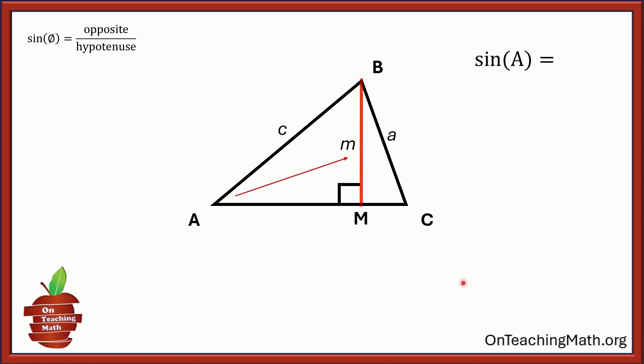So now check this out. We have this little right triangle in here. Let's talk about the sine of angle A for this new triangle. Would you agree that it would be M over C? You see how that works? Angle A did not change, side A didn't change, but now we have this little triangle inside of it. So the sine of A would be M over C. Now let's do the same thing with angle C. The sine of angle C would be M over A because the hypotenuse of this one is A.